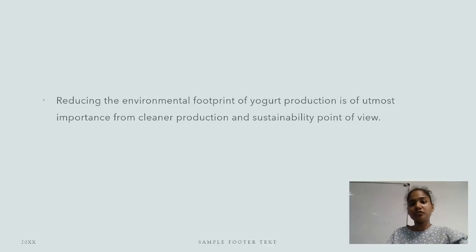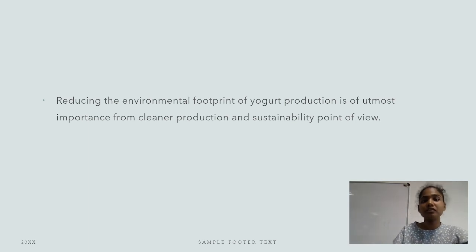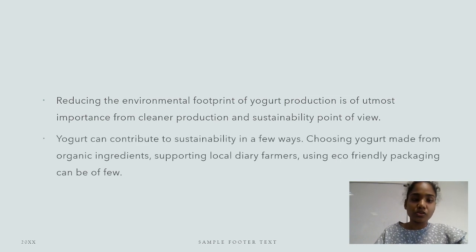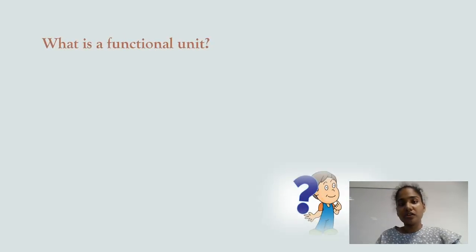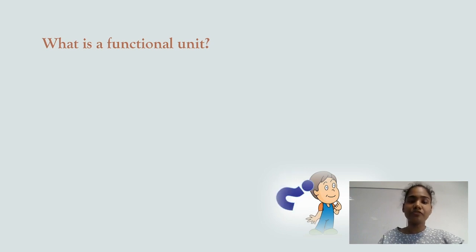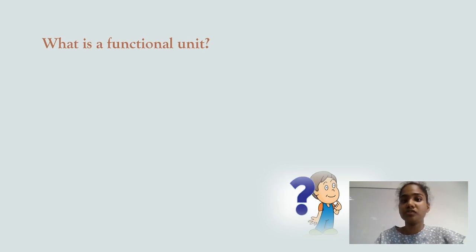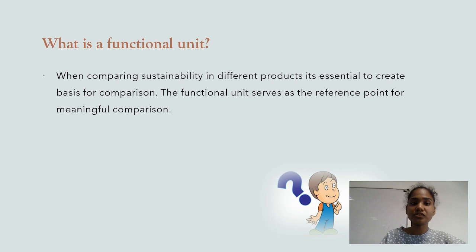Yogurt comparatively contributes less to the carbon footprint, but we should consider producing it more sustainably. Reducing the environmental footprint of yogurt production is of utmost importance from a cleaner production and sustainability point of view. Choosing yogurt made from organic ingredients, supporting local dairy farmers, and using eco-friendly packaging can be helpful. To get a quantifiable measurement, we need a functional unit — similar to how we use kilograms to measure mass.